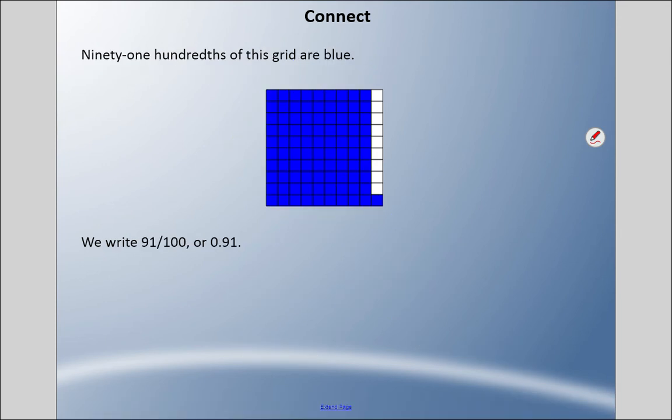On this grid here, I have 91 hundredths being blue. We can write it as a fraction: 91 over 100, or we can say it is 0.91. Notice the word hundredths I use here, I also use it here because this one ends on the hundredth spot, so we would say 91 hundredths.